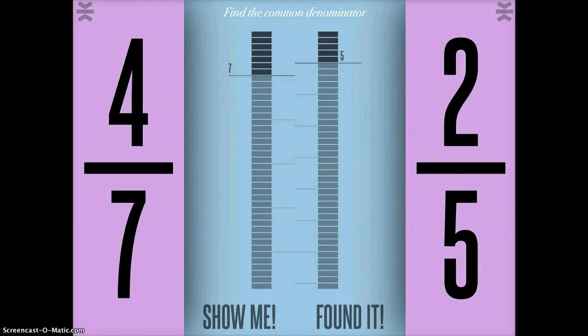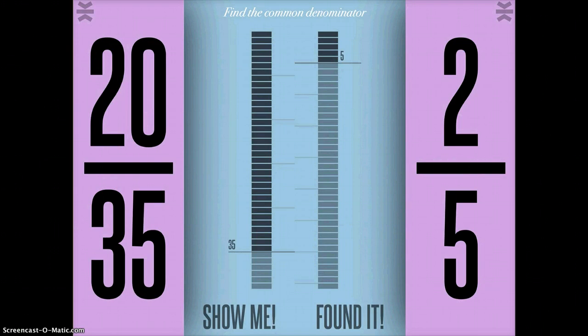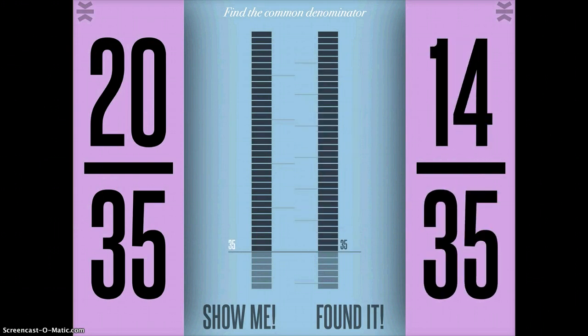So first you find the common denominator, which in this case would be 35. So I'm going to slide this down to 35, slide this down to 35, so I'm sliding this bar with my finger. And it puts it into that common denominator so that you can tell what you need to do.